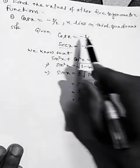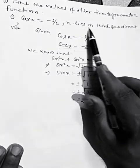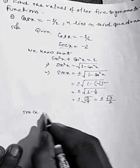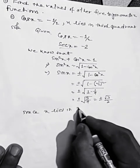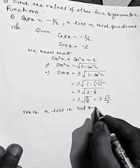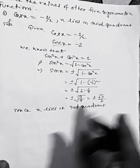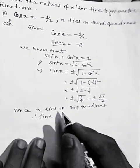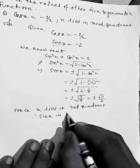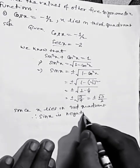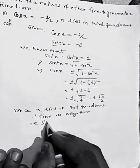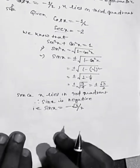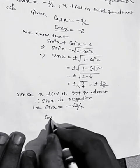Now we use the condition that x lies in the third quadrant. Since x lies in the third quadrant, sin x is negative. Therefore sin x equals minus root 3 by 2.